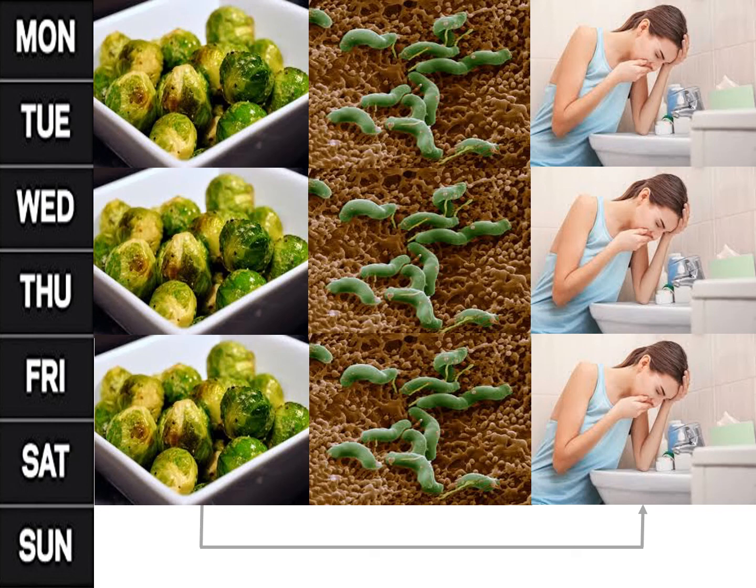To illustrate, suppose that three times after we eat sprouts, we experience nausea, but only because we were infected with a stomach bug at the same time. Nevertheless, in the future, the sprouts alone might elicit nausea. Two or three occasions might be sufficient to elicit this aversion to sprouts.